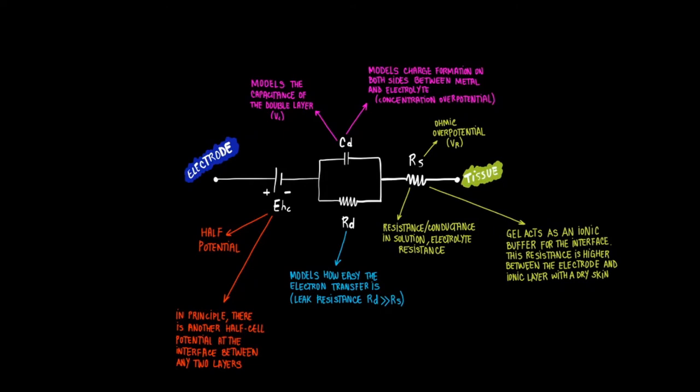A good way to think of this resistance is actually to consider the effect of having the gel applied onto the tissue before electrode placement on the skin. The gel acts as an ionic buffer for the interface. This resistance will be higher between the electrode and the ionic layer if the skin is dry, that is without the gel.